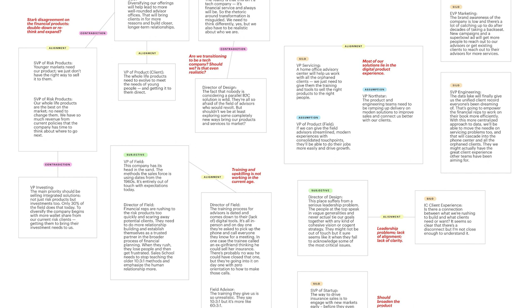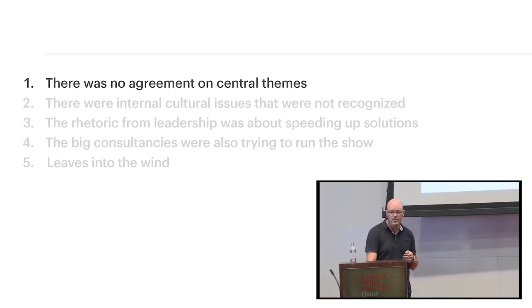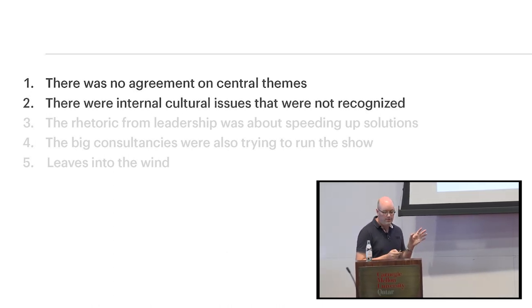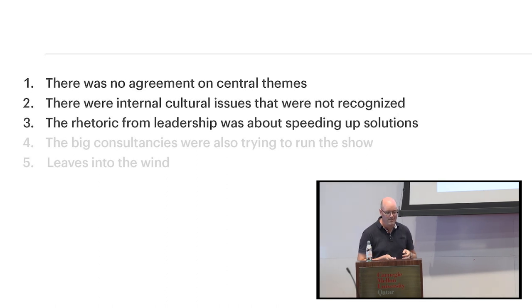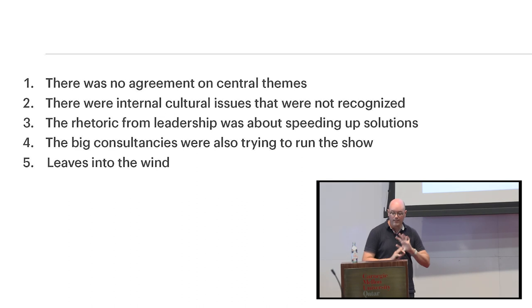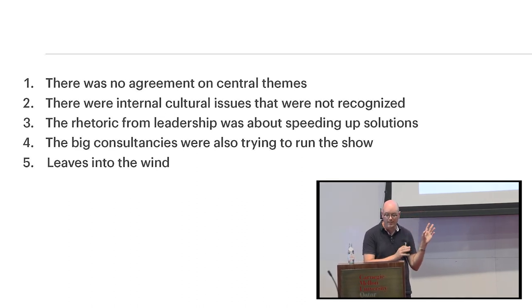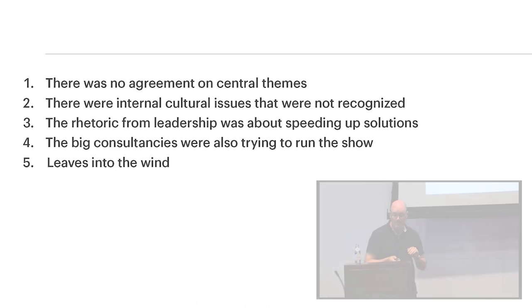All of this reflects a mix of problems: organizational culture, structural issues, maybe some management issues, but also a reflection of human nature, plain and simple. To sum up what I learned in this diagram: there was no agreement on central themes. Nobody was fully bought in on a shared direction. There were clearly internal cultural issues that were not being talked about. The rhetoric from leadership was about speeding up no matter what it took, so there was this mad dash to solve all the things, but nobody was ever really aligned in the first place. The big consultancies were there, but they had never really validated what their focus should be. I was a senior director at the company, and every day I felt like I was just raking leaves into the wind.